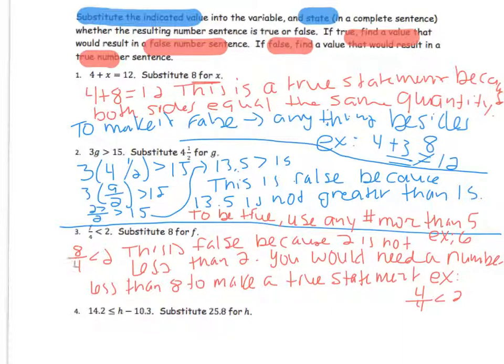And same with this one. I did not write out this one so let me just go through this last one. If we plug in 8, 8 divided by 4 is exactly 2. So this is false because 2 is not less than 2. So I would need a number less than 8 to make a true statement and I just chose 4. So if we plug in 4, 4 over 4 or 4 divided by 4 is 1. 1 is less than 2. So that's what I had for these two.